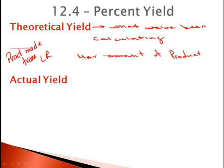Now, if we actually do the experiment and complete the chemical reaction, the product that's produced from the lab is the actual yield. Usually, this is going to be given to you in a problem.